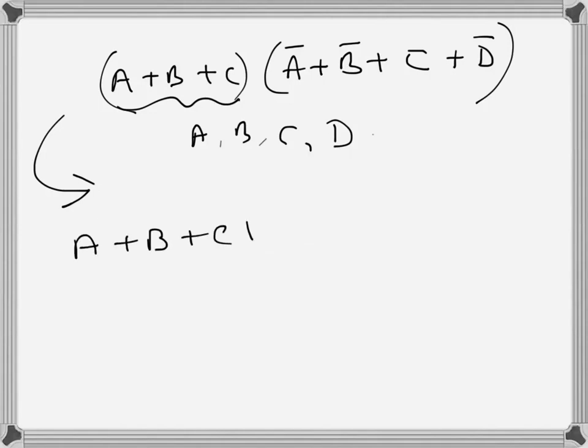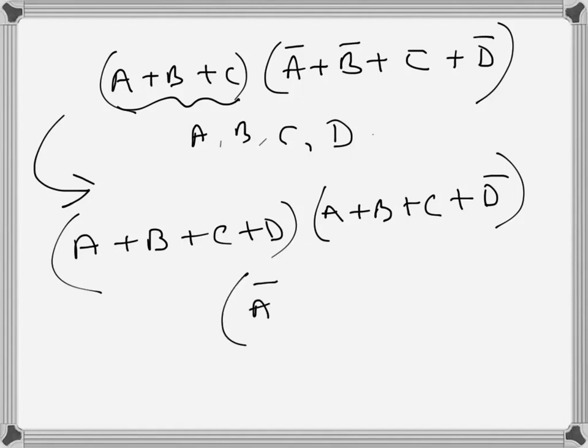So this one will be A plus B plus C plus D, A plus B plus C plus D bar. And this one has already everything.